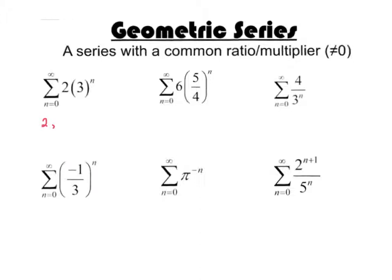The next would be when n equals 1, so 2 times 3 to the first, which is 6. Then 2 times 3 squared, so 2 times 9, which is 18.